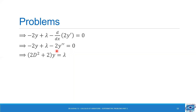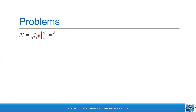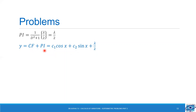This gives the second order differential equation (D square plus 1) y equal to lambda/2. The auxiliary equation is m square plus 1 equal to 0, therefore the roots are plus or minus i, and the complementary function is c1 cos x plus c2 sin x. The particular integral is 1/(D square plus 1) of lambda/2; since it is independent of x, putting D equal to 0 gives particular integral equal to lambda/2. So the complete solution is y equal to c1 cos x plus c2 sin x plus lambda/2.